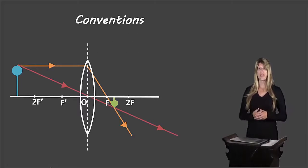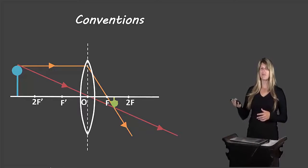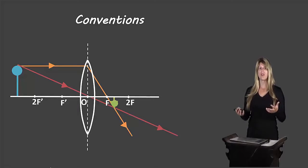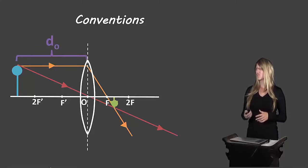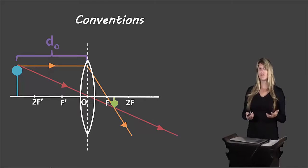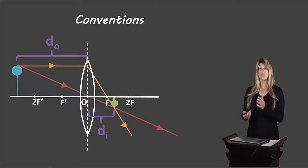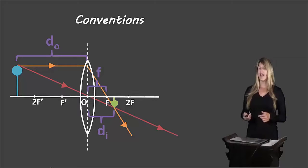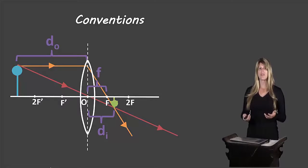Let's start with our ray diagram. This shows a converging lens with the object in blue and the image in green. DO is the distance between the object and the optical center — D for distance, O for object. DI is the distance between the image and the optical center. And F is the distance between the optical center and the focus — F stands for focal length.